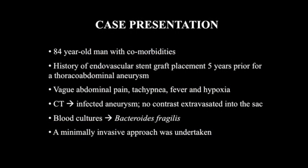An 84-year-old man with multiple comorbidities and a history of endovascular stent graft placement 5 years prior for a thoracoabdominal aneurysm presented with vague abdominal pain, tachycardia, tachypnea, fever, and hypoxemia. CT scan showed an infected aneurysm with no contrast extravasating into the sac. Blood cultures returned with Bacteroides fragilis.